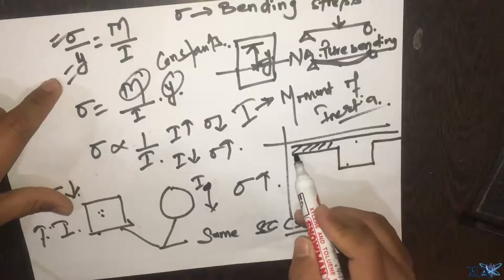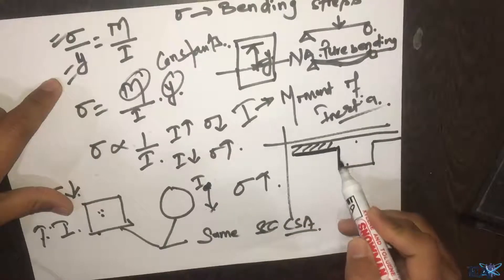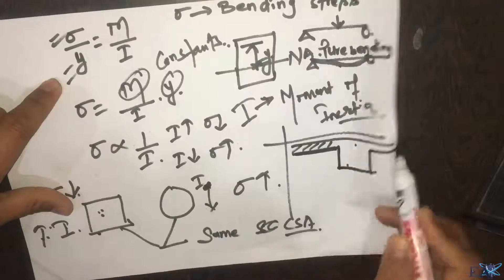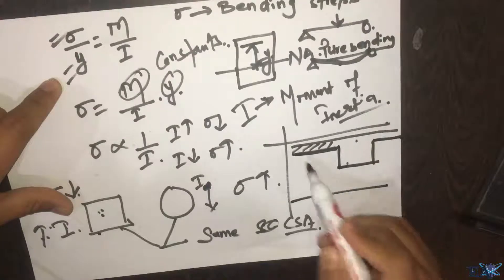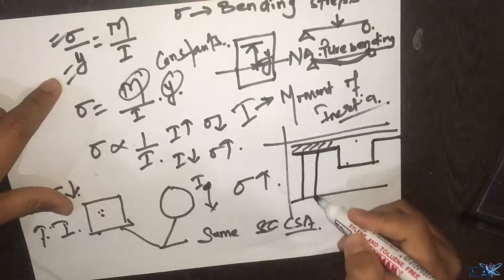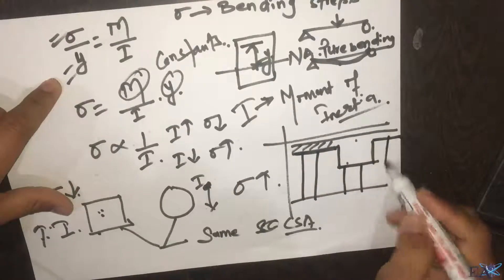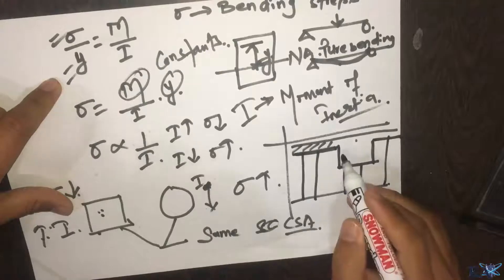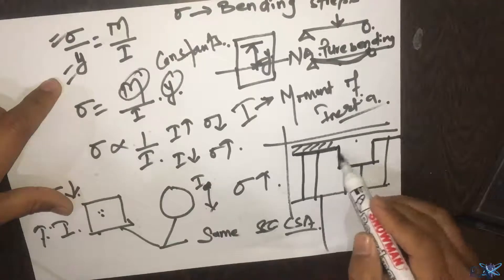He cuts the formwork for this portion, then this portion, this portion, and this portion, and he joins them. After joining them, he pushes them into position using vertical props.